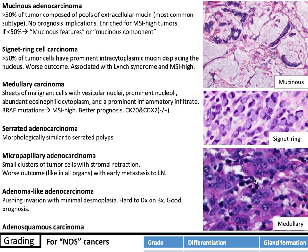Serrated adenocarcinoma is morphologically similar to serrated polyps. Micropapillary adenocarcinoma shows small clusters of tumor cells with stromal retraction and has a worse outcome — similar to micropapillary carcinoma in other organs like the breast — with early lymph node metastasis. Adenoma-like adenocarcinoma demonstrates pushing invasion with minimal desmoplasia, is hard to diagnose on biopsy, and carries a good prognosis. There is also adenosquamous carcinoma.